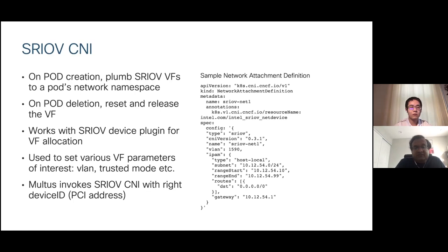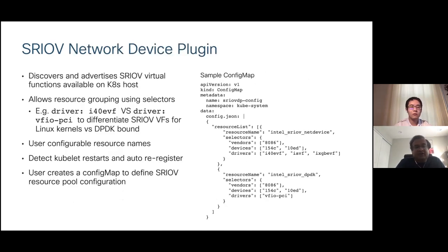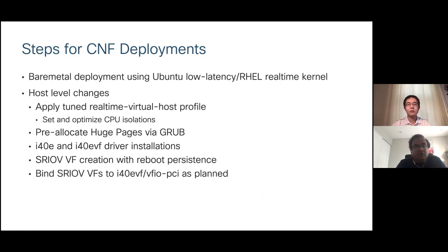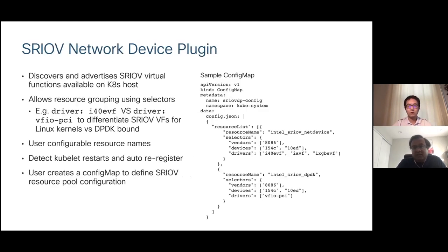The SRIOV network device plugin's responsibility is to discover and advertise SRIOV virtual functions available on the Kubernetes host. You can do resource groupings based on various parameters. In a sample config map, you advertise two sets of resources: SRIOV net device and SRIOV DPDK, advertising them based on the driver being either i40evf or VFIO-PCI. In this case we're interested in the Intel XXV710 cards, identified by vendor and device ID. These are user-configurable resource names. It also detects kubelet restarts and auto-registers.